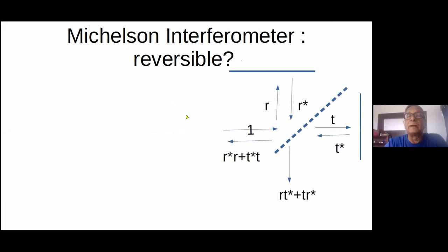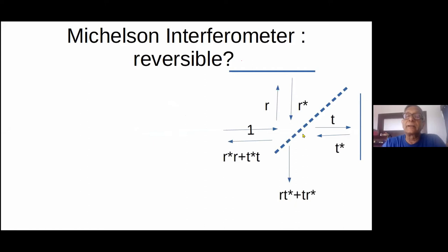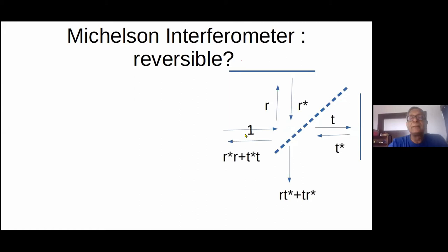If R goes to the phase-conjugate mirror, R* comes back. If T goes to the other mirror, T* comes back. Now at the output: one contribution is RT* and the other is TR*, and we can show their sum is RT* + TR*, which equals the quantity we proved to be zero — so nothing comes out the side. What comes back toward the source is R*R + T*T = |R|² + |T|² = 1. So the principle of reversibility is satisfied when you use a phase-conjugate mirror, and you seem compelled to take the complex conjugate of the wave — a phase lag becomes a phase lead.